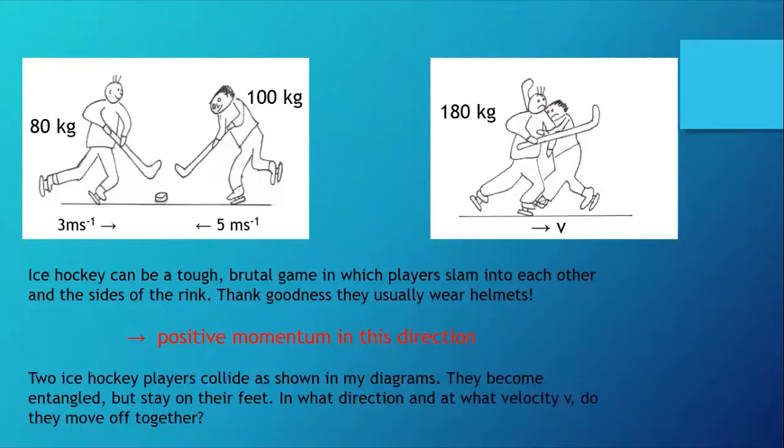Now here we've got two rugby players at different masses moving together. On the left hand side they're separate, on the right hand side they've combined together, become entangled somehow, managed to stay on their feet and move off to the right at a velocity v. The question is: what is that velocity v, the velocity that they move off together at?